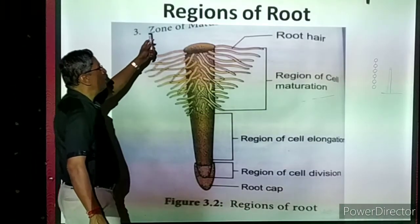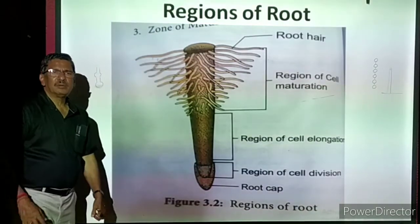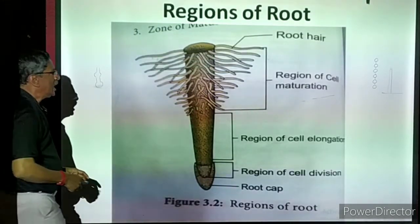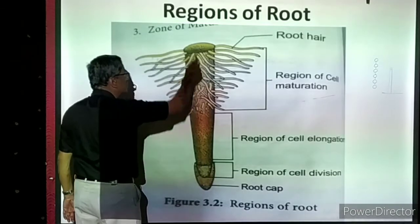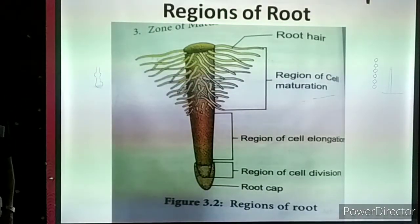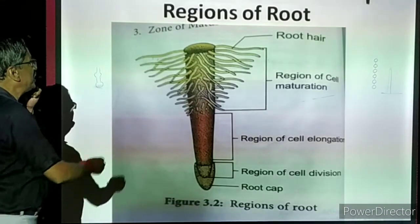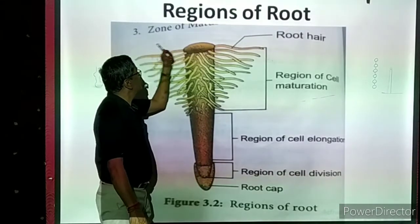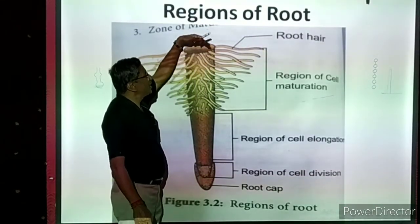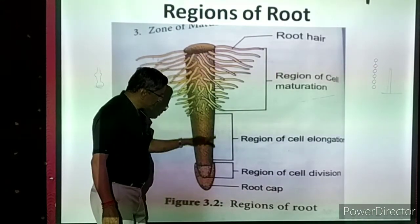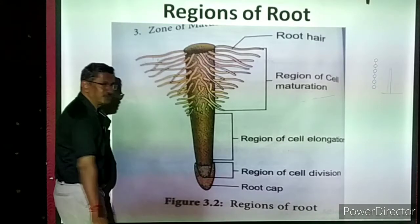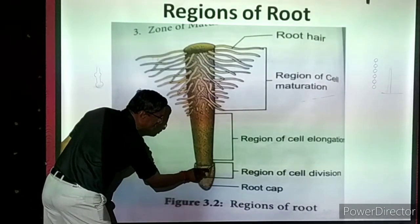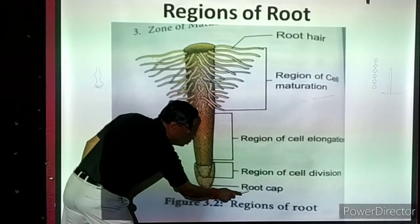Now we are going to study the regions of a root. Taking one main root, we look at the various regions or zones present. This upper part of the root connects to the stem above soil level. The tip of the root — the bottom part — has a protective, thick covering called the root cap.